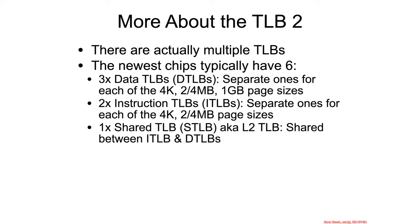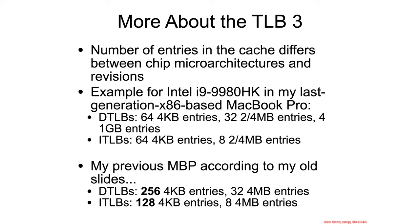There are multiple TLB types for different page sizes, and also separate data TLBs (DTLBs) and instruction TLBs (ITLBs). Latest chips can have up to six TLB types: DTLBs for 4 kilobyte, 2 or 4 megabyte, and 1 gigabyte; ITLBs for 4 kilobyte and 2 or 4 megabyte. There are currently no 1 gigabyte ITLBs defined in the manuals. There's also a shared level-two TLB that can be shared between DTLBs and ITLBs, with the exact number of entries varying by hardware.